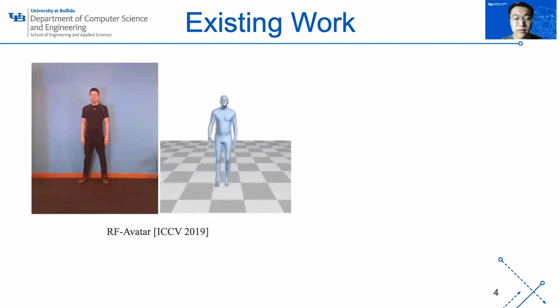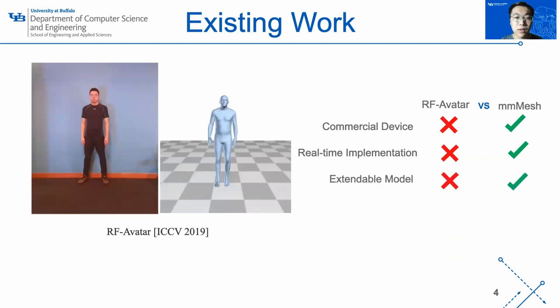The only work which constructs the 3D human mesh using RF signal is RF avatar. However, our mmMesh system has the following three advantages. First, our proposed system can accurately estimate the human mesh by using only a commercial device instead of a specialized testbed. Second, our system is able to directly estimate the dynamic human mesh in a real-time manner. Third, our model is more extendable since it can be deployed on any devices that can generate 3D point clouds like Kinect, LiDAR, and depth camera.